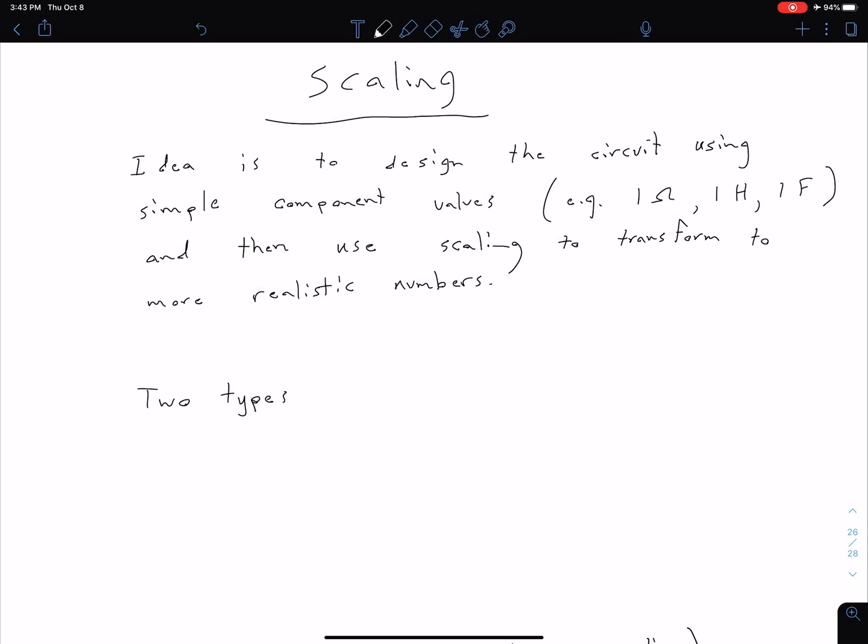That's going to make things a lot easier than having to deal with microfarads, millihenrys, kilohms, stuff like that. Once we've done this design with simpler values, we can scale it to transform to more realistic numbers. Because of course, 1 ohm is very small, 1 farad is very large. So we use it as a design tool, do the math with easy numbers, and then scale it to more realistic values.